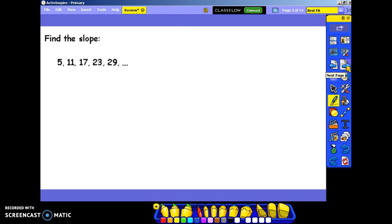Find the slope. I know you guys haven't seen anything like this, but slope is just rate of change. So what's the rate at which these numbers are changing? To get from 5 to 11, you add 6. To get from 11 to 17, you add 6. 17 to 23, 23 to 29, you still add 6. So your slope is 6.